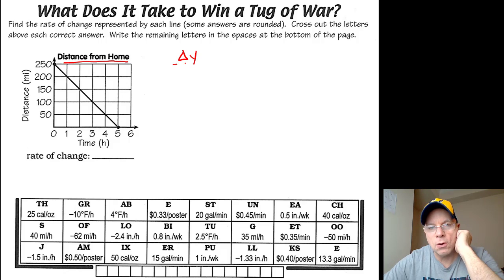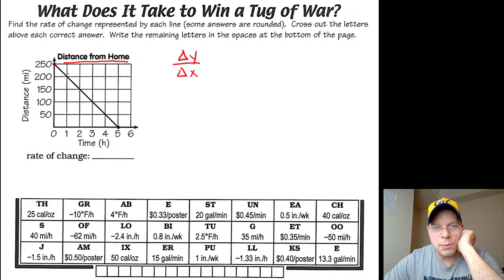We're going to find the change in y over the change in x, and we'll include our units since units are given. Now, unlike the last line, any two points you choose here—you see how every single point intersects at a known x and y—so you can choose any two you want.